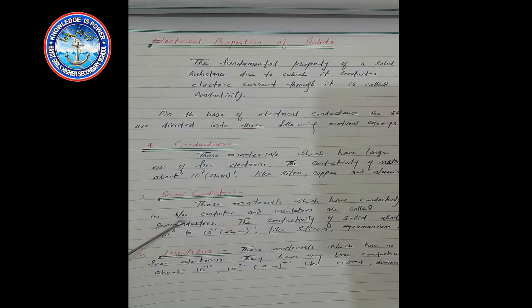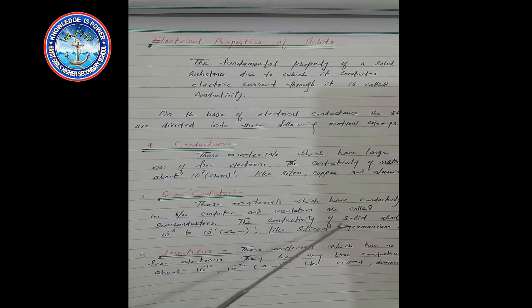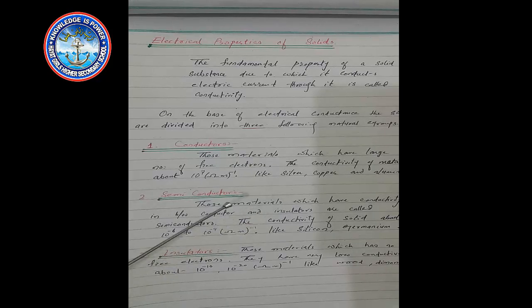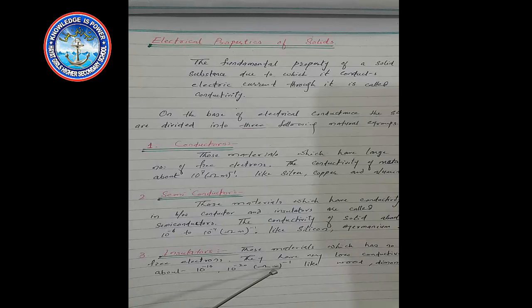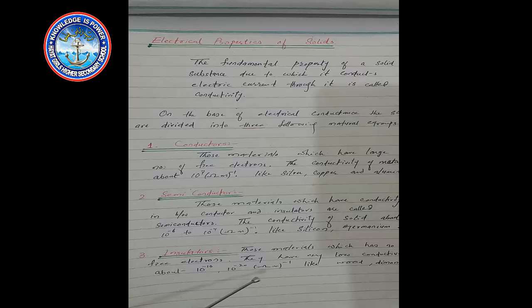Number 2 — Semiconductor: those materials which have conductivity in between conductor and insulator. The conductivity of a semiconductor is about 10 to the power minus 6 to 10 to the power minus 4 ohm-meter inverse. Examples: silicon and germanium. Number 3 — Insulator: those materials which have no free electrons and have very low conductivity, about 10 to the power minus 10 to 10 to the power minus 20 per ohm-meter. Examples: wood, diamond, gold, etc.